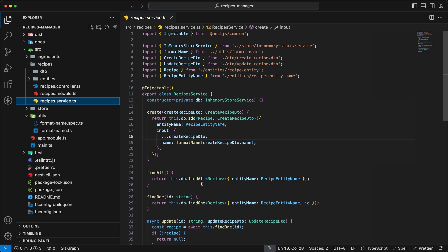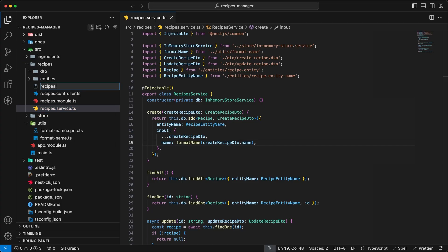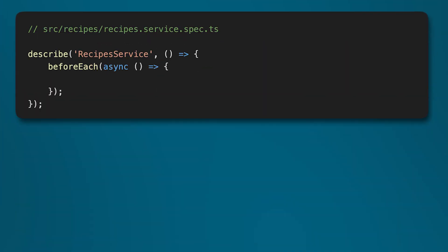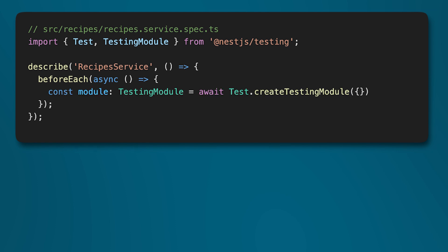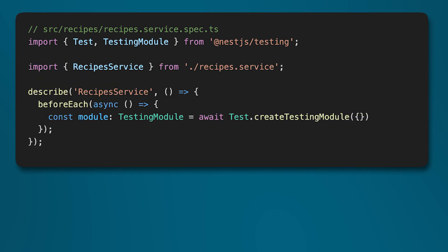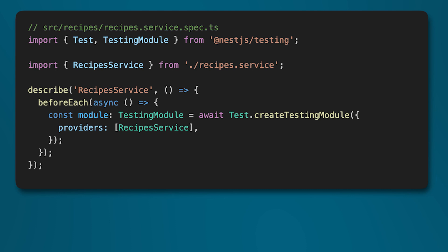An in-memory store database is injected to the service, and the class method uses the database service to read and write recipes. To test the recipes service method, you can add a test file and add a setup phase where you create a testing module with testCreateTestingModule. In that module, you add the recipes service as a provider and call the compile method to generate the module.